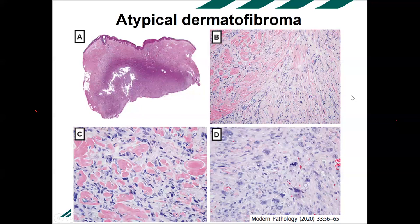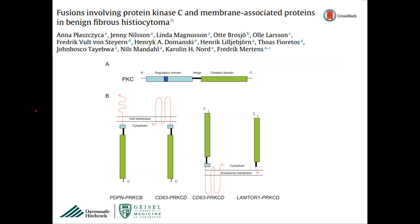Even the classic dermatofibroma can, in exceedingly rare cases, metastasize, but for the most part we consider these tumors benign. We now know something about the pathogenesis of dermatofibroma: a subset has fusions encoding membrane-associated proteins — CD63, podoplanin, and others — fused with PKC (protein kinase C), specifically different isoforms: PKCα, PKCβ, or PKCδ, which are serine-threonine kinases that activate signaling through phosphorylation of various targets.